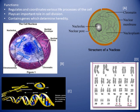The nucleus regulates and coordinates various life processes of the cell and plays an important role in cell division. It contains genes which determine heredity — for example, we receive genes from our father and mother, and those genes determine our characters such as hair type, eye color, and complexion.